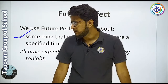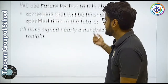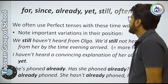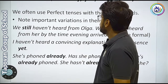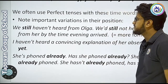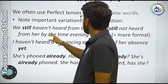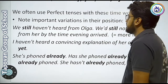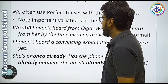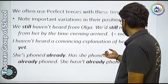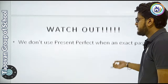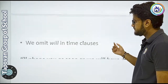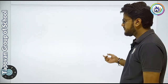तो यहाँ तीनों tenses खत्म हुए. Examples दिए गए हैं — for, since, already, yet, still, often, etc. We often use perfect tense with these time words, with important variations in their position. Example: We still haven't heard from Olga. We had still not heard from her by the time evening arrived. I haven't heard a convincing explanation of our absence yet. ये सारे examples देख लेना — आपकी textbook में भी दिए गए हैं.